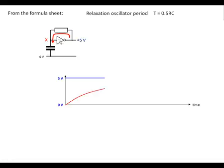Now this is a Schmitt inverter, which means that when the voltage here rises above 3 volts, it's going to be seen as high, which will make the output here go low.